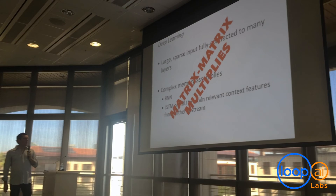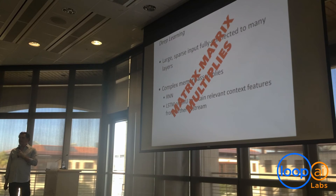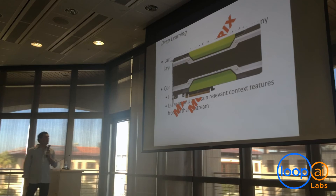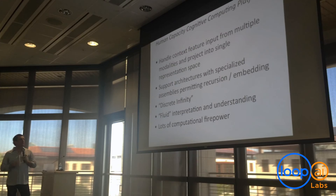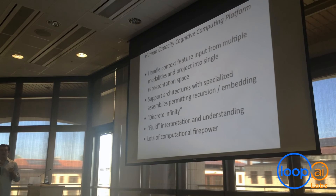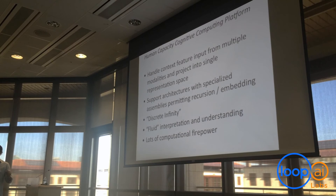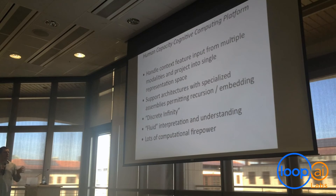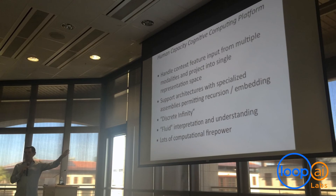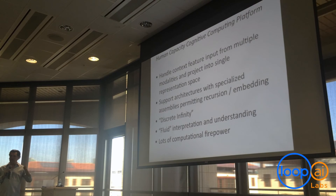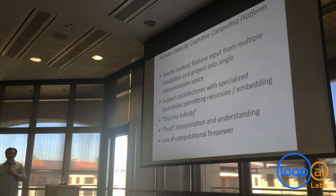The main point is that all of these things — your sparse fully connected input and all these complex memory assemblies — require a lot of matrix multiplications. Obviously the best solution we have right now for doing this kind of thing is using the power of GPUs, because using CPUs with so many input features would take a very long time to train. So to sum up, if we're going to use some kind of human-capacity cognitive computing platform, it needs to handle context feature input from a bunch of different modalities and project those interpretations into a single representation space, support all kinds of different architectures with specialized assemblies permitting recursion and embedding, and produce a fluid interpretation system where things can move around in the representation space as new information comes in.